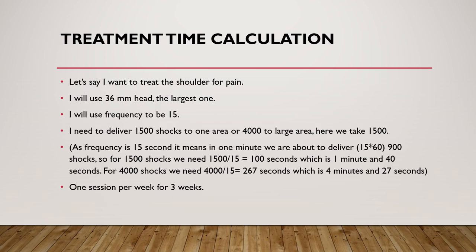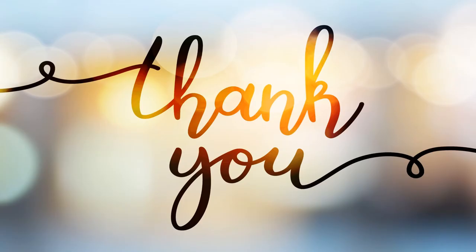For treatment time calculation: decide on the total number of shocks — for example 1000, 3000, or 5000 — then divide that number by the frequency. For example, 3000 shocks at a frequency of 10 equals 300 seconds. This is straightforward arithmetic, and a detailed explanation is also available in another video. Thank you very much.